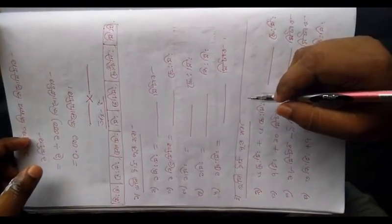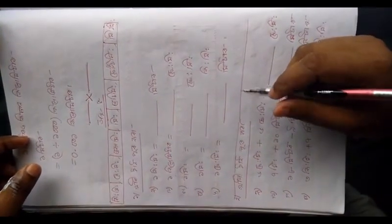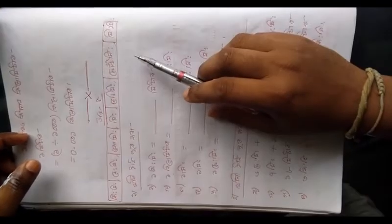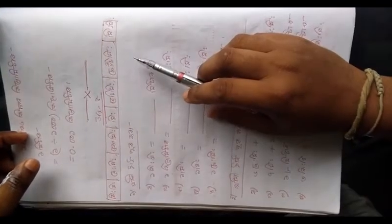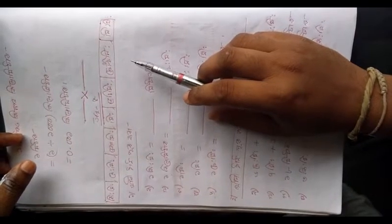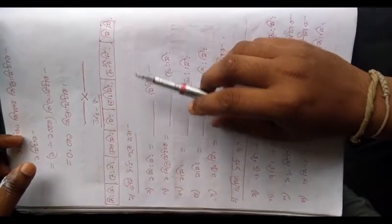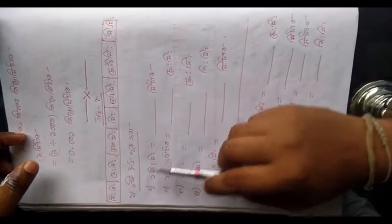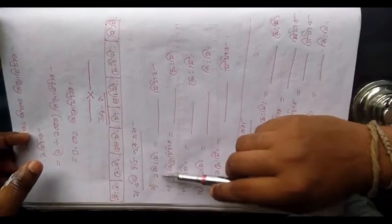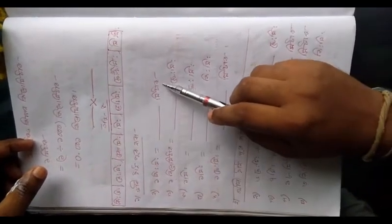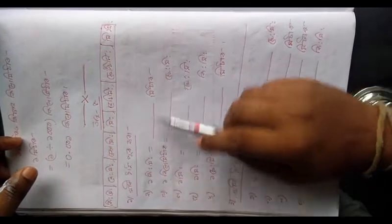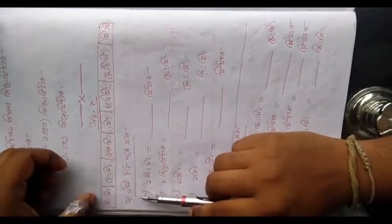We know that one damage cell affects 1 km from 10 meters, and another damage cell affects 1.0 kilometers. Now, let me tell you the next question: 1 kilometer.